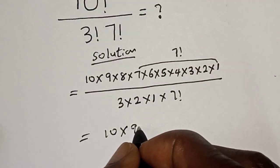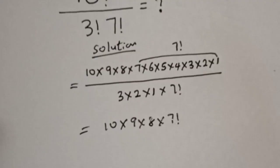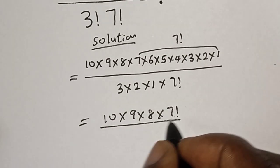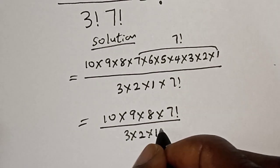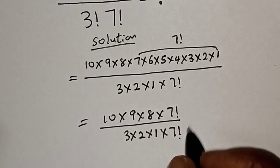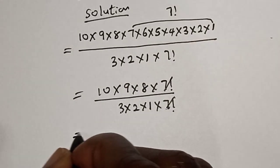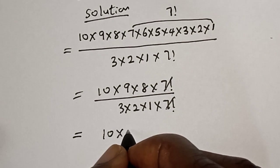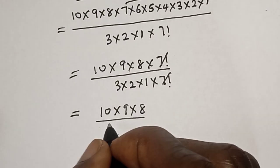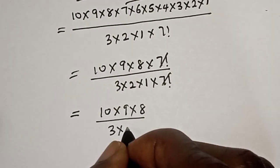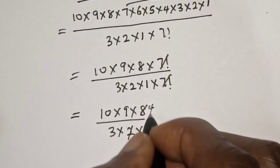...times 9 times 8 times 7 factorial over 3 times 2 times 1 times 7 factorial. The 7 factorials cancel. We have 10 times 9 times 8 over 3 times 2 times 1. The 2 here and 1 here give 4. The 3 here and 3 here cancel.